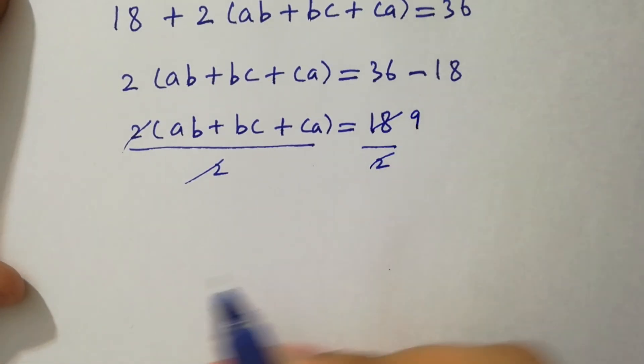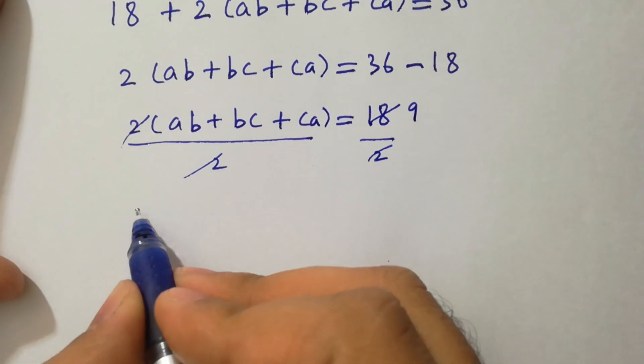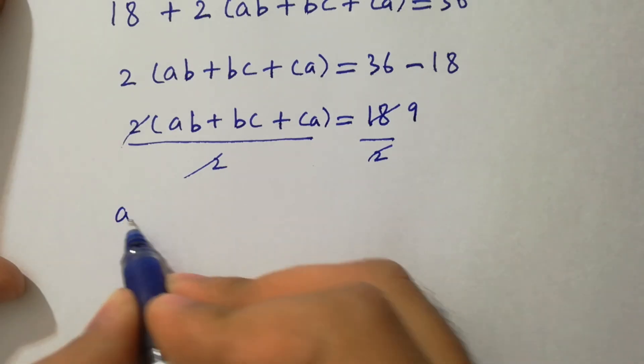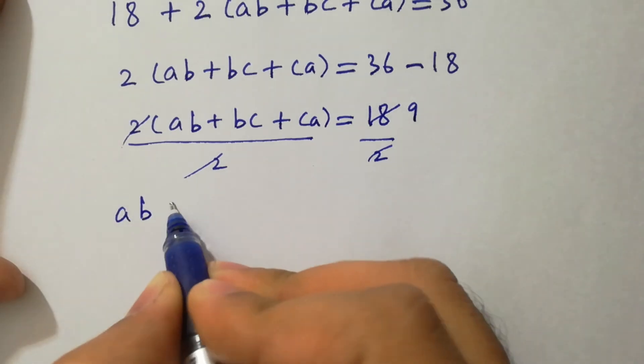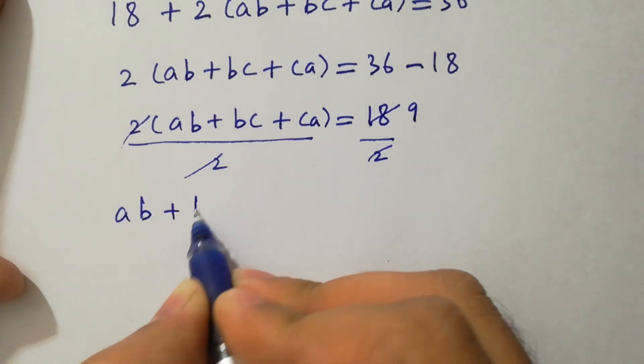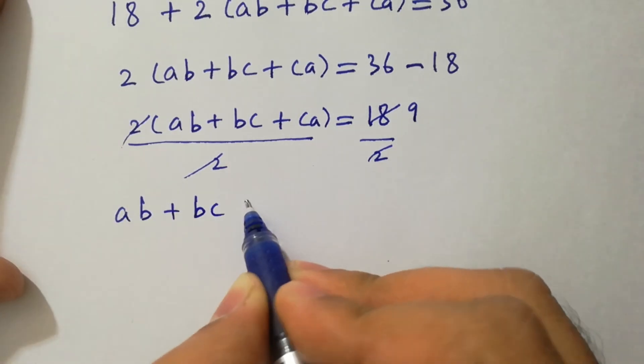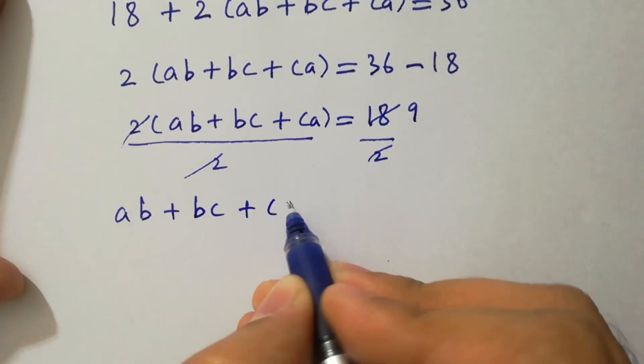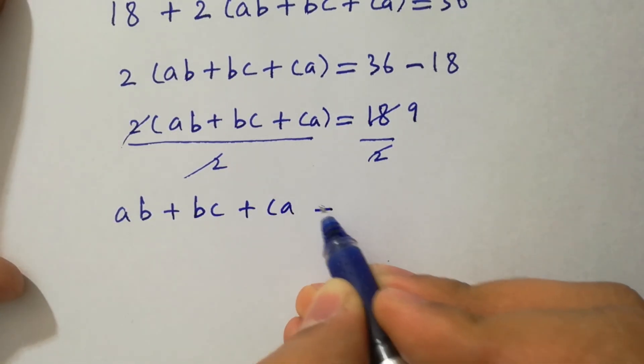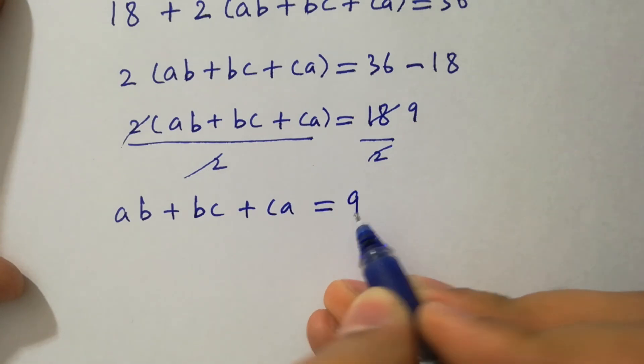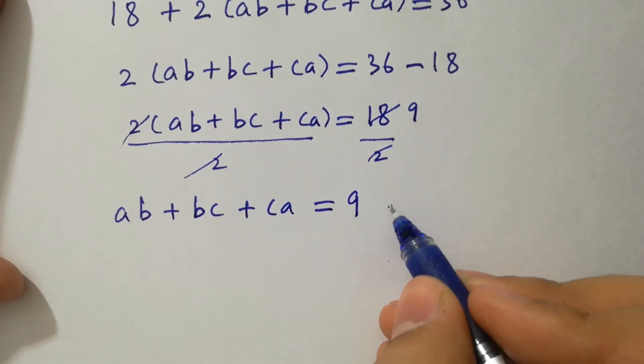So 2(ab plus bc plus ca) equals 18, which gives ab plus bc plus ca equal to 9. Say this is the fourth equation.